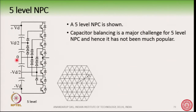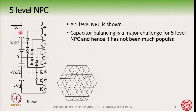Now you also have 4 capacitors here, and the voltages at these points are: all the capacitors have equal voltages. So this point is 0, this is Vd/2, this is Vd, then −Vd/2 and −Vd. The whole DC bus voltage is split into 4 equal parts across all the capacitors.